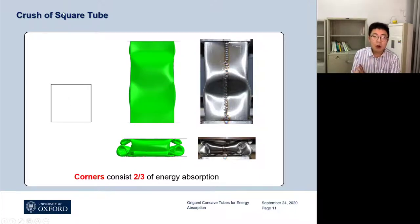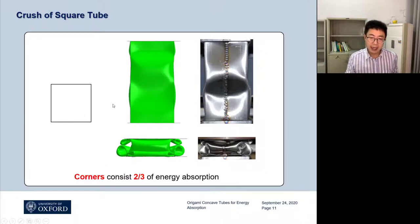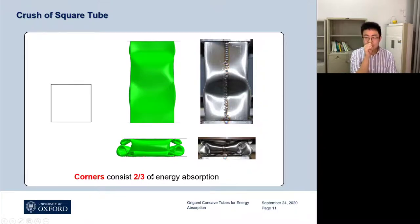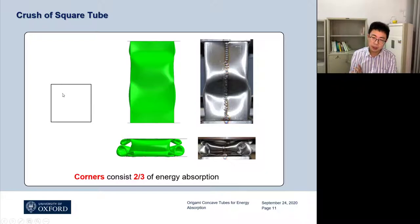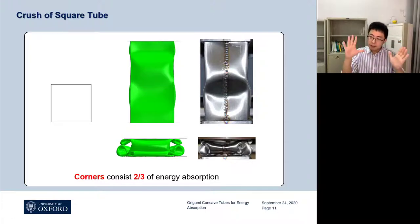Let's look at the first one: buckling. Here is a normal square tube; we compress it — this is the simulation and this is the actual experiment I did. You can see it just folds down typically. If you study the sources of energy absorption, you realize that the corners — these four corners — actually absorb two-thirds of the total energy. What we can learn is that the energy absorption concentrates on these corners, while the flat panels in between don't help that much.